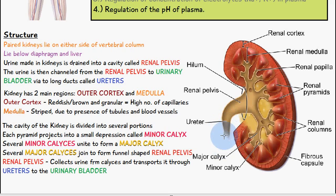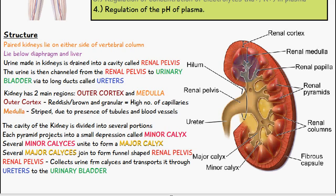The kidney has two main regions: the outer cortex and the medulla. The outer renal cortex is reddish-brown and granular because of the high number of capillaries present. The renal medulla is striped due to the presence of tubules and blood vessels.